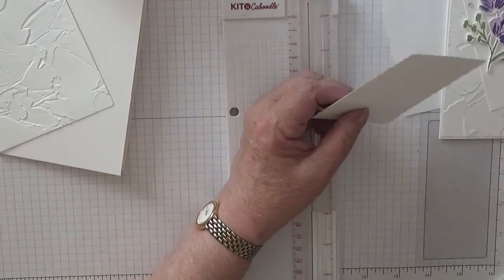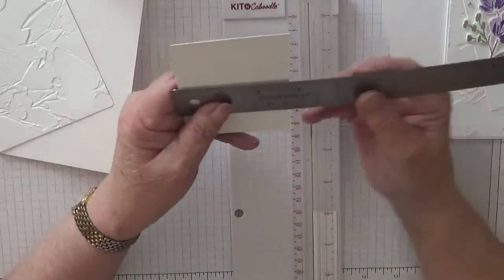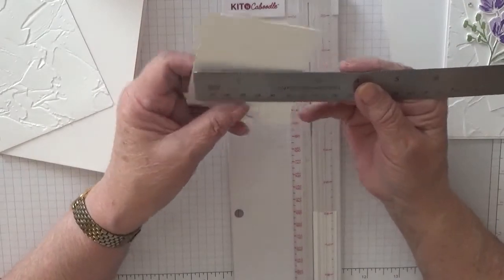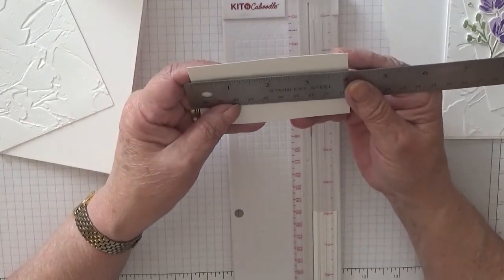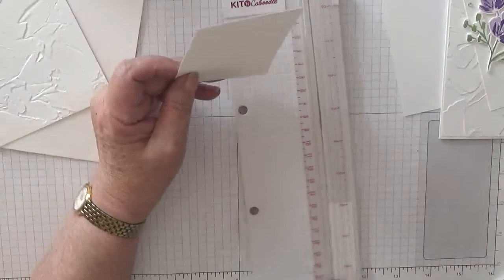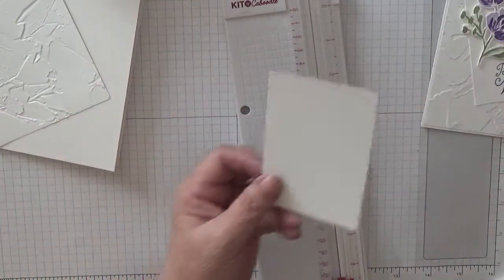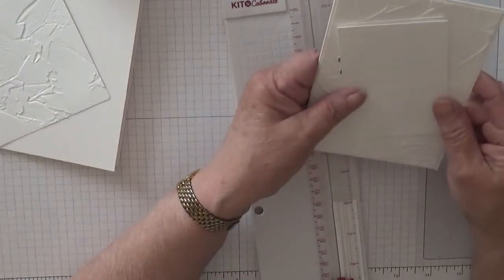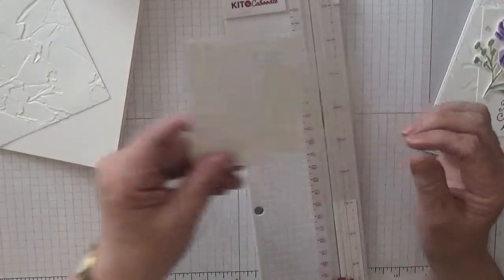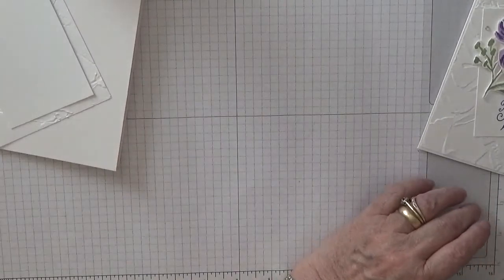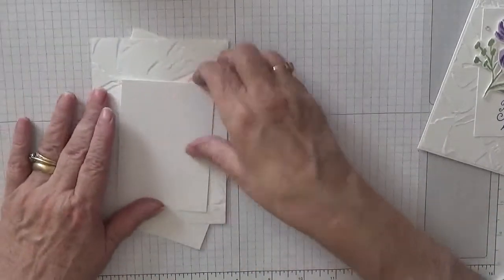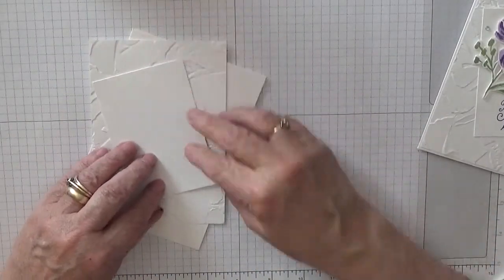Right, this measures two and three quarters by four inches. So I did that one too small, two and three quarters by four inches. And that will go over there like that.